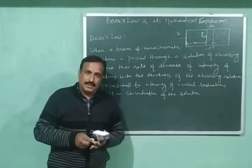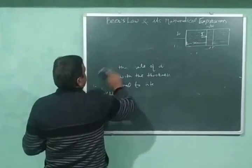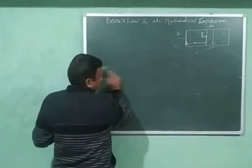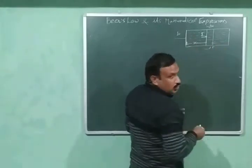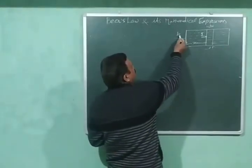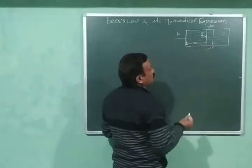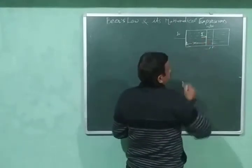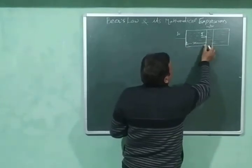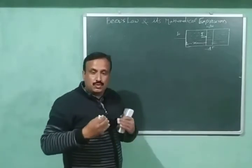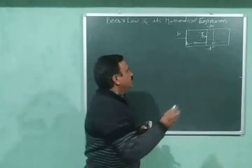Now let us derive the mathematical expression for this law. Here we have a solution of an absorbing substance. The intensity of incident radiation is I₀ before entering into the solution. After passing distance x through the solution, the intensity decreases to value I. After this distance x, I have considered a very small thickness dx.